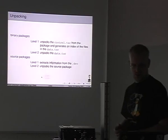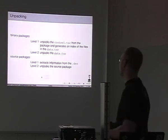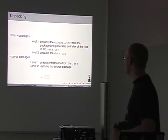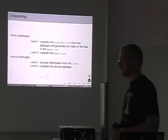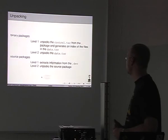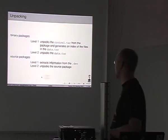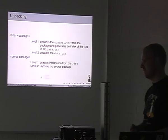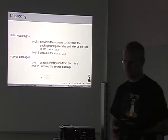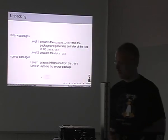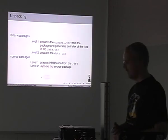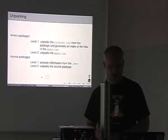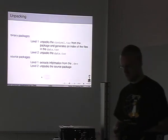For binary packages, we first unpack the control tar — I've left out the suffix because nowadays you can change it, even in innovation packages, and Lintian should support those two file formats. It unpacks the control tar, so the Debian directory, and generates an index of the files in the data tar — basically calls dpkg-deb minus c, or tar minus t, or something like that. And then level 2 unpacks the full data package, similar to what dpkg-deb does.